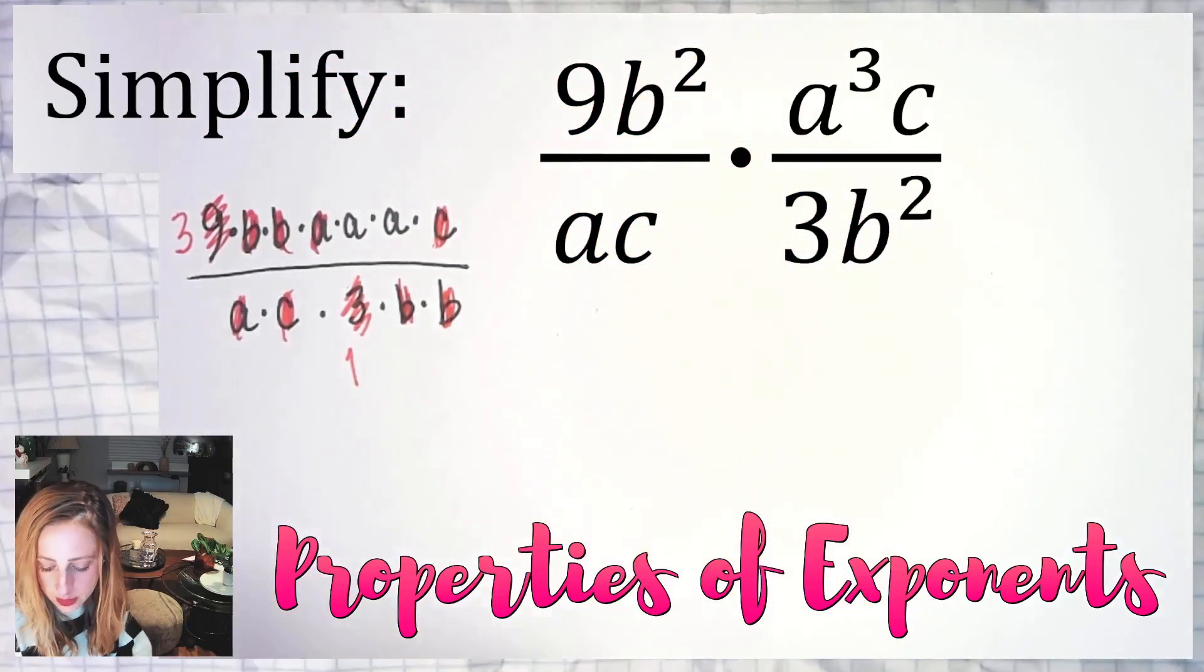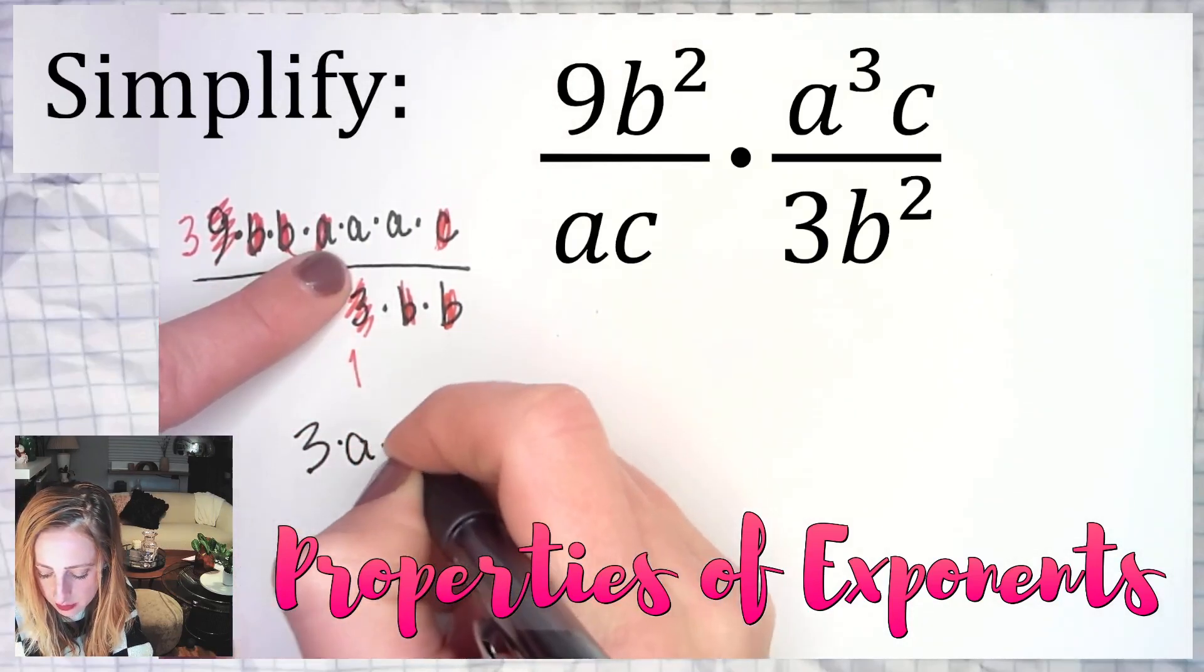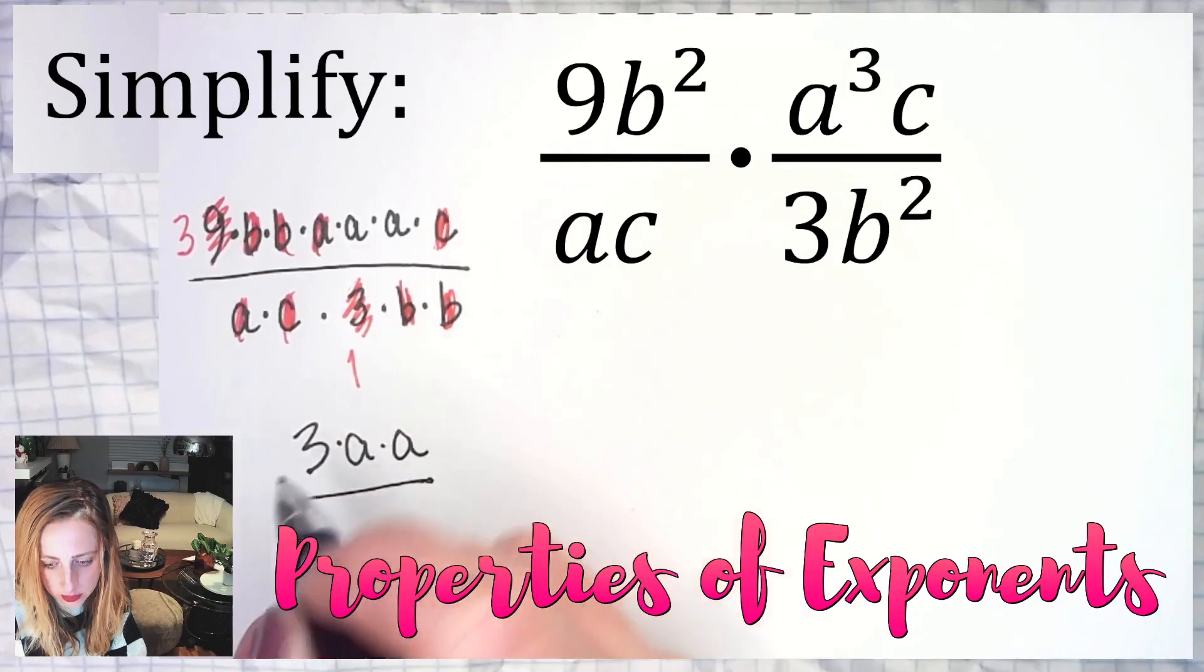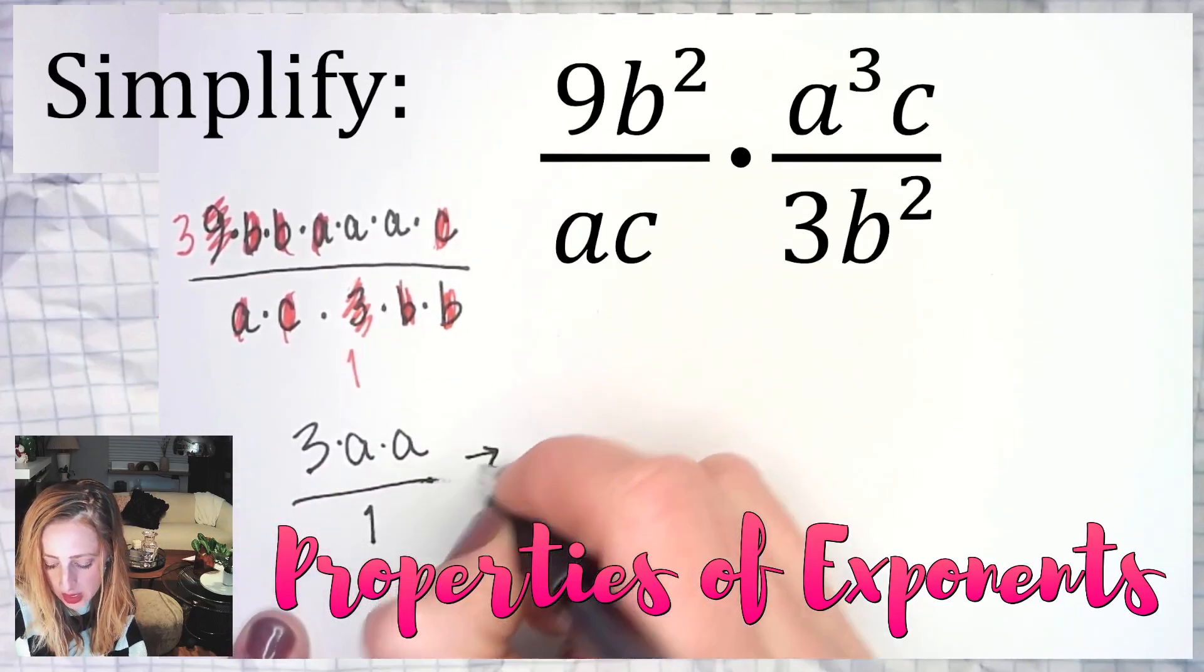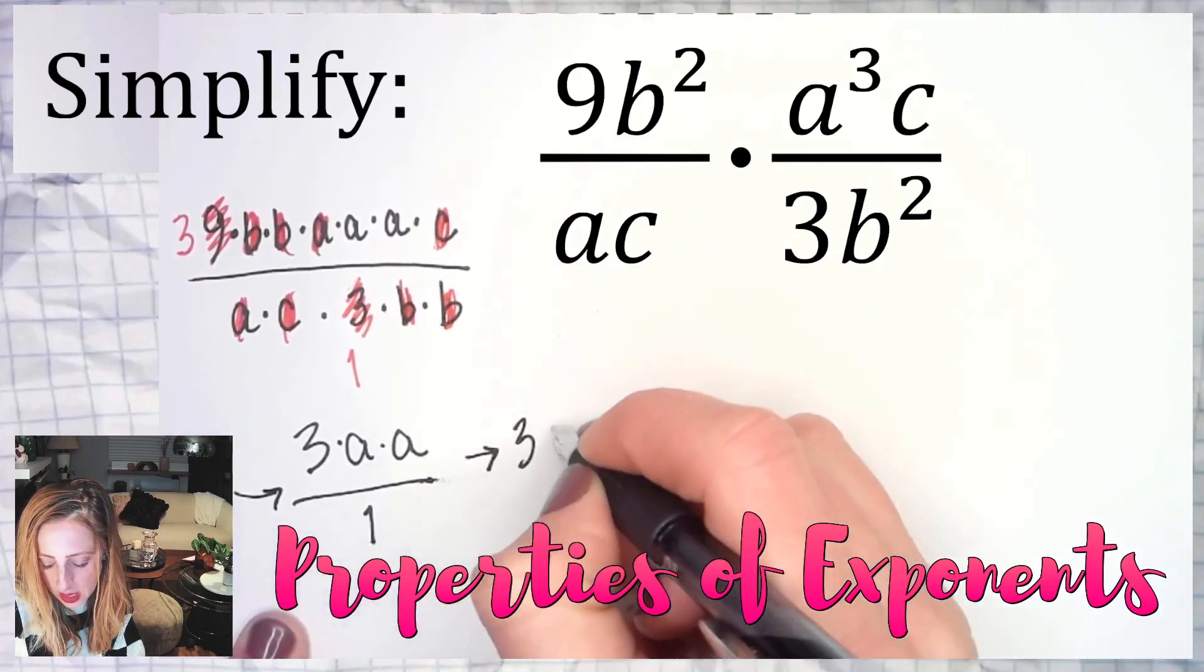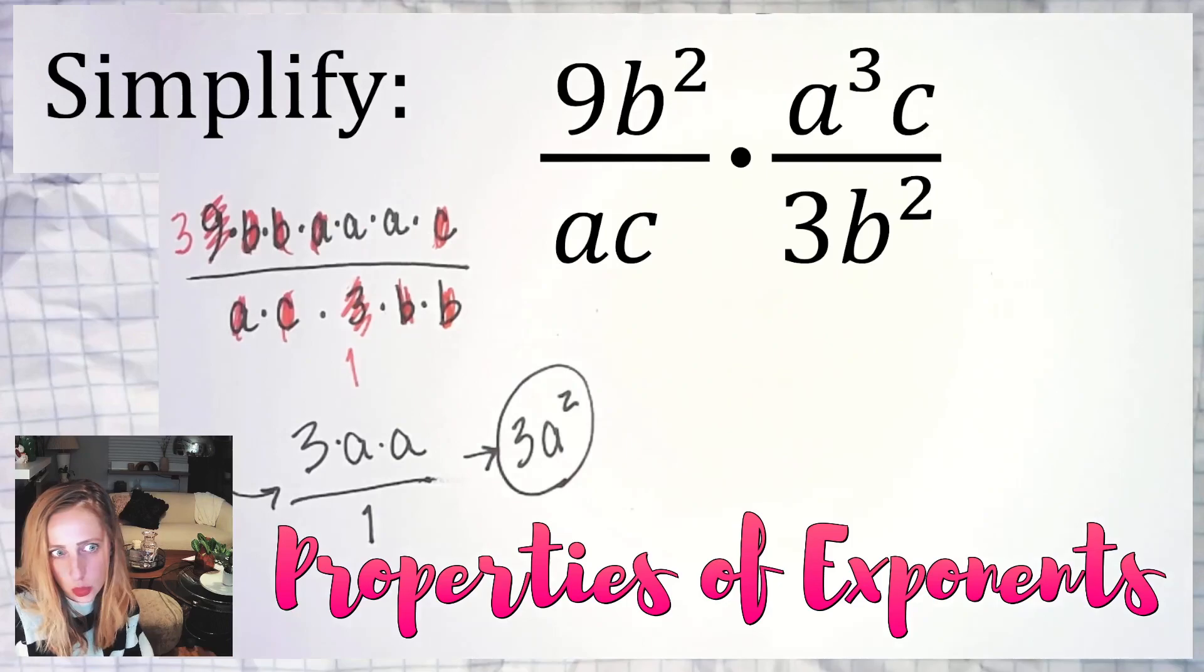So what's left behind? I'm left with three times a times a over one, also known as three a squared. So that's one way to do it, kind of foolproof that way.